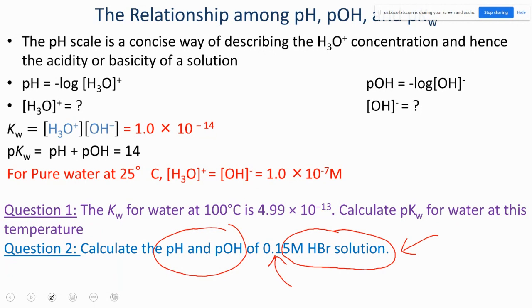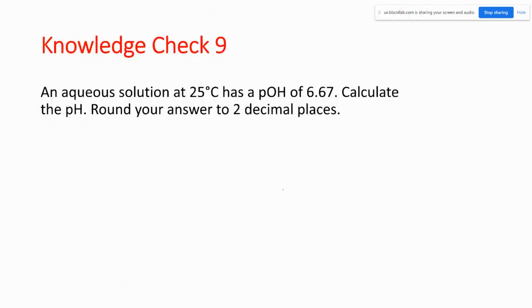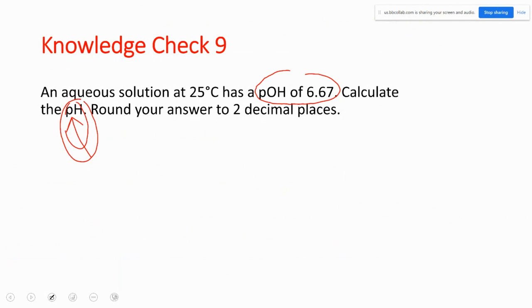Knowledge Check 9: an aqueous solution has pOH = 6.67. Calculate the pH. Since pH + pOH = 14, you can easily find the pH of that solution.